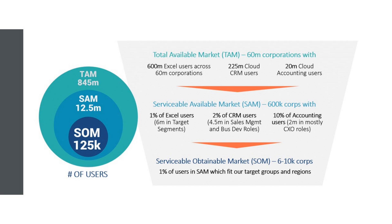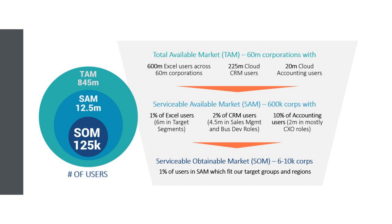Here's an example of somebody who has calculated total available market. They're looking at Excel users, cloud users of CRM, and cloud users of accounting software, and they've broken that down to what they think the serviceable available market is — 1% of Excel users, 2% of CRM, 10% of accounting. They go further and say 1% of users in the serviceable addressable market fit their target groups and regions, identifying 125,000 users they can target. This sort of exercise is great for an MBA class to go out and find a particular niche and estimate these various levels.